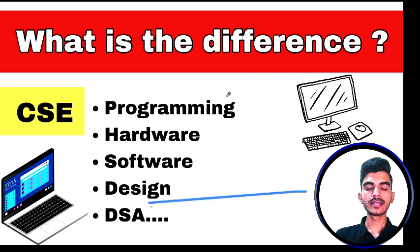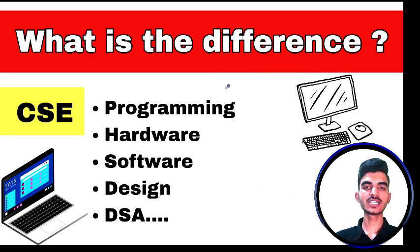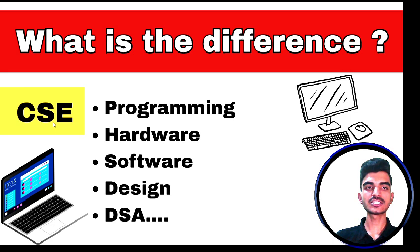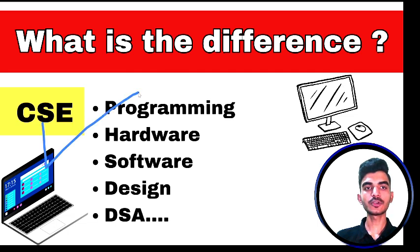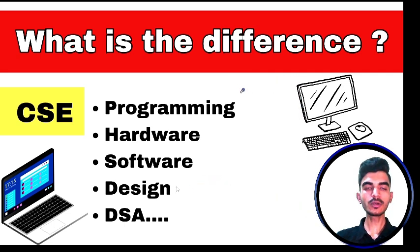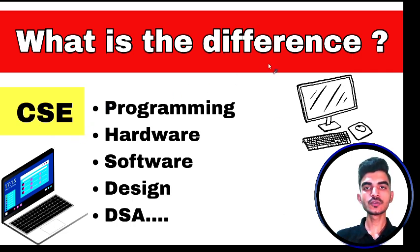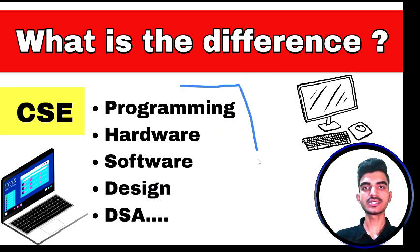Regarding the syllabus, all the branches in engineering will be 70 to 75 percent the same, except a few semesters for your specializations. There are many specializations as main branches — such as computer science with cyber security, computer science with data science, computer science with IoT, and computer science with business professional systems. The main difference between core computer science and computer science with other specializations is that in core CS, you are given an option to choose your specialization.